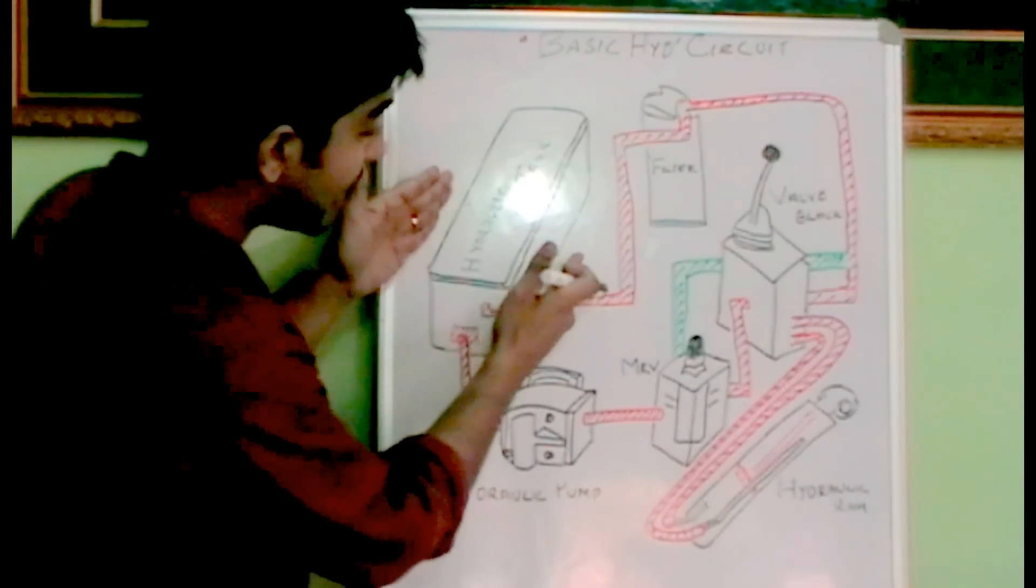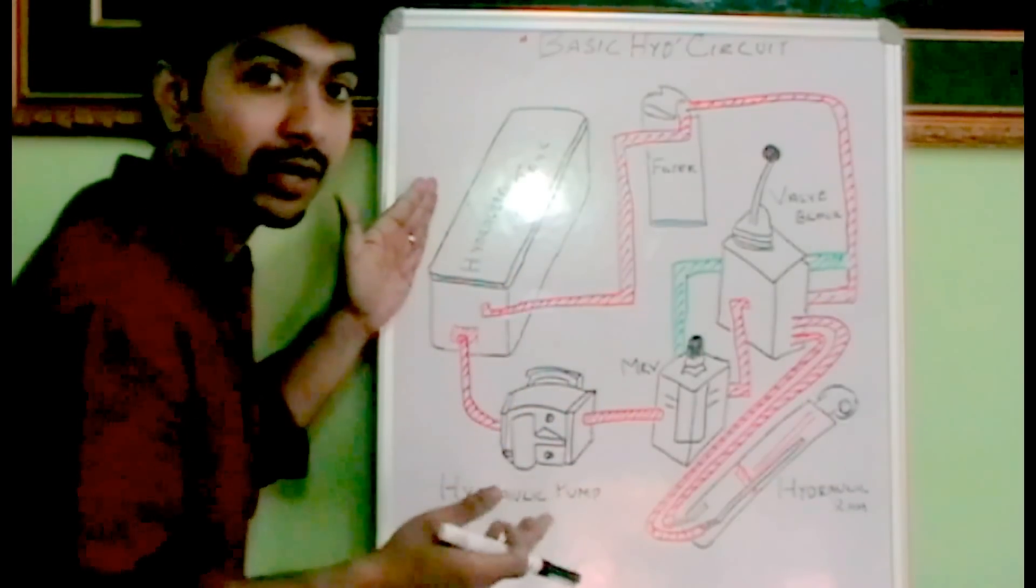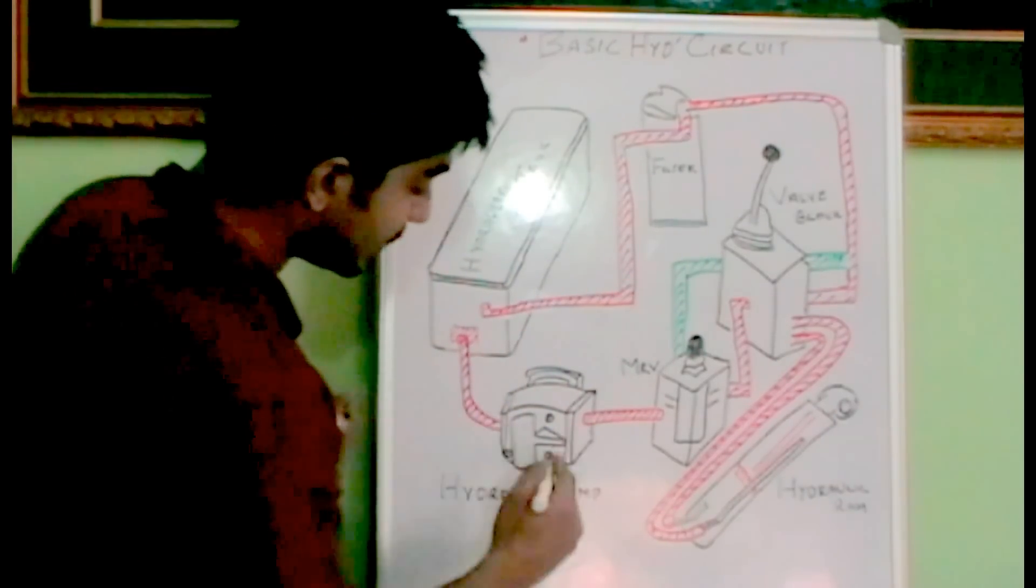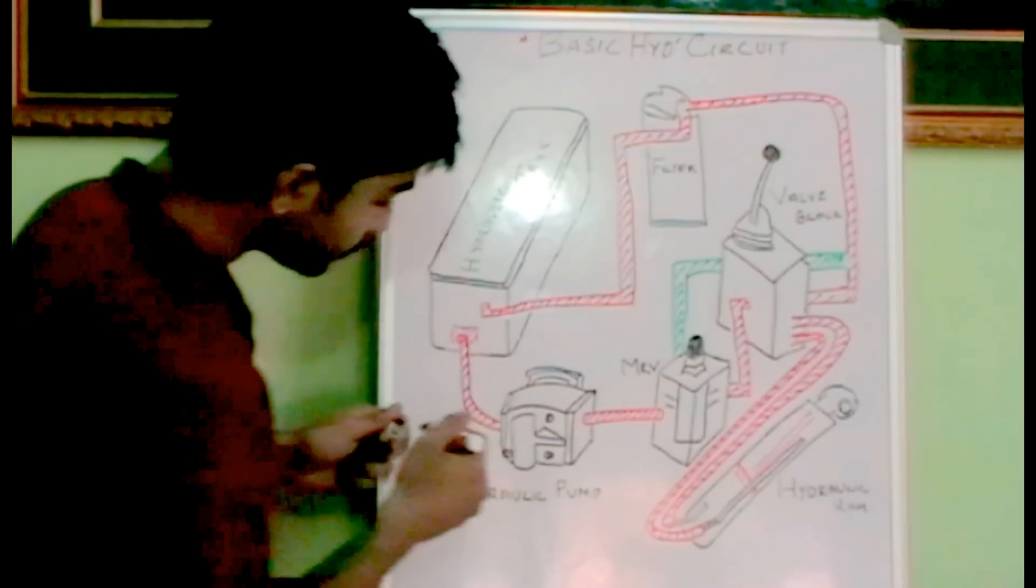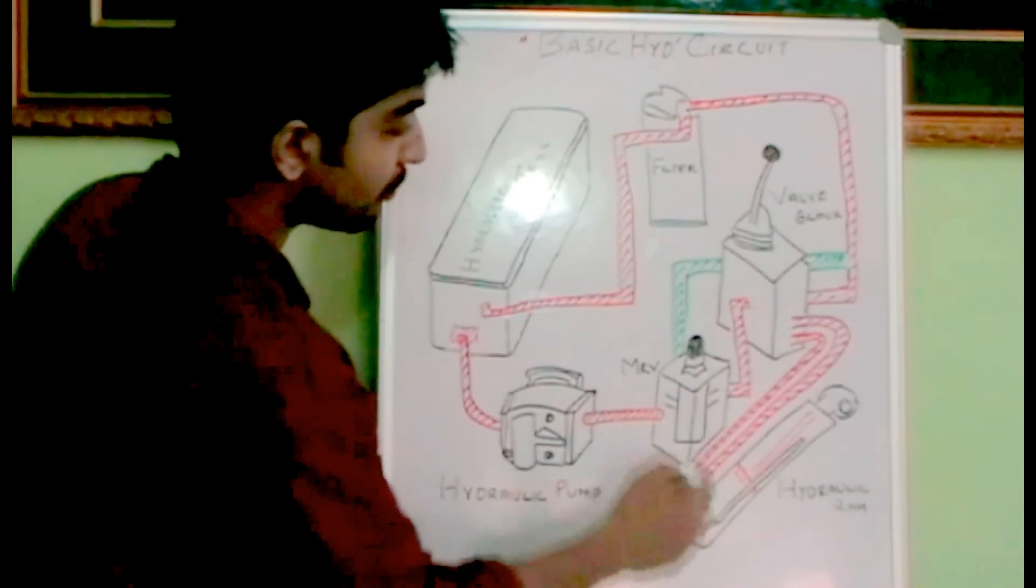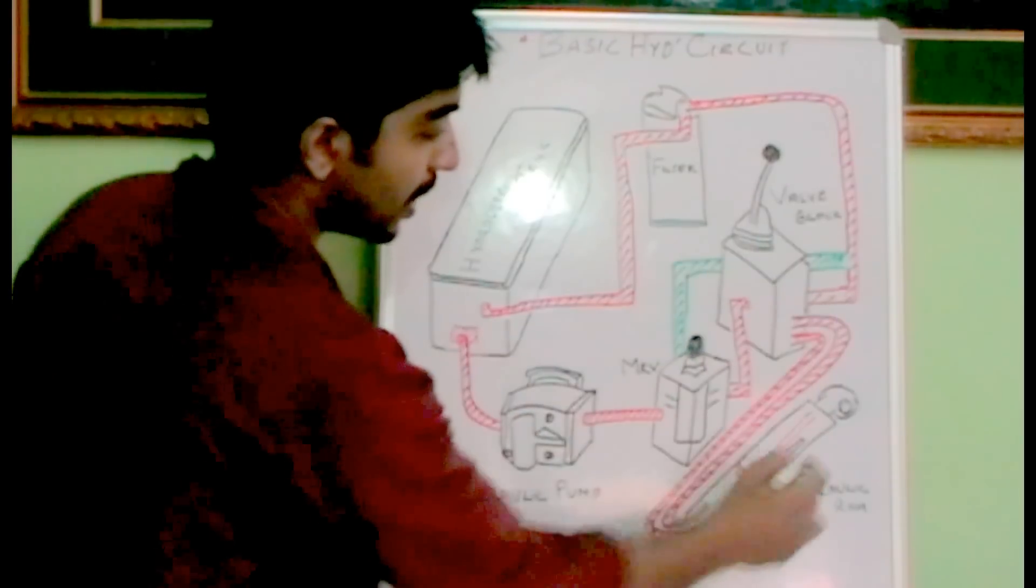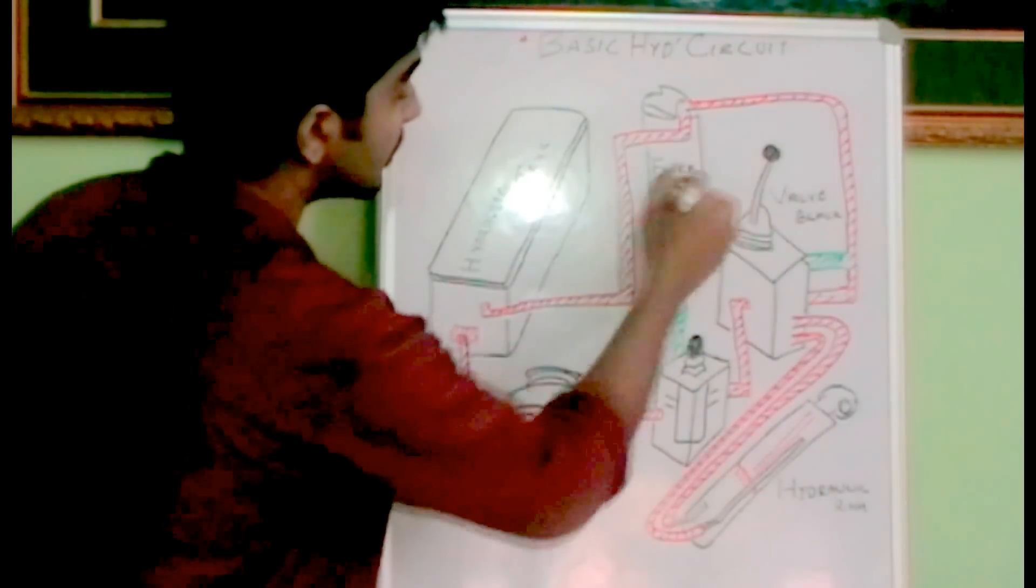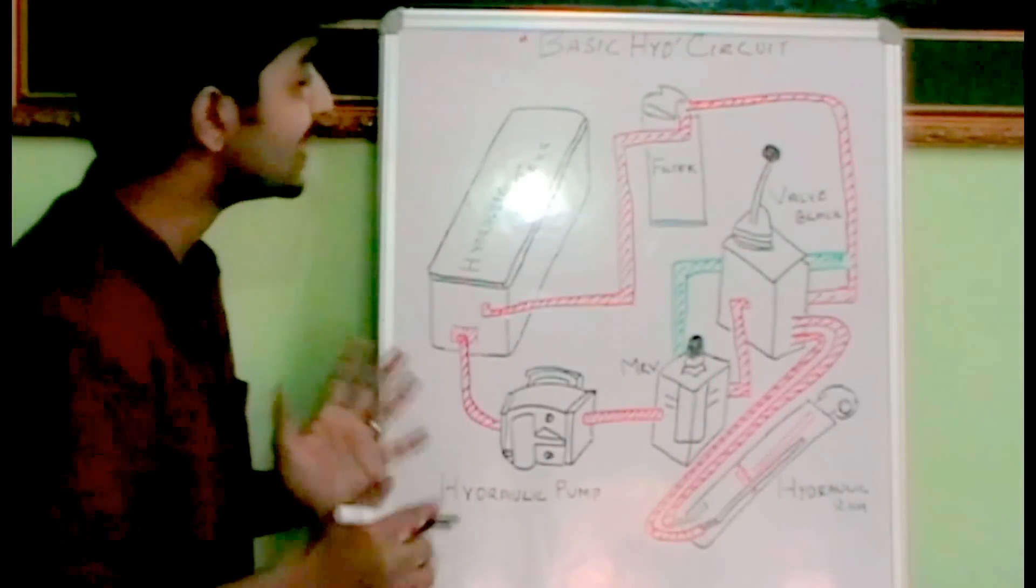We have the hydraulic tank which will be filled with hydraulic oil or hydraulic fluid. We have the hydraulic pump over here. We have the relief valve over here and the valve block, the hydraulic ram, and the return filter. Let's see how it works.